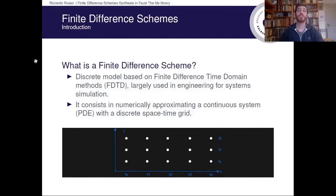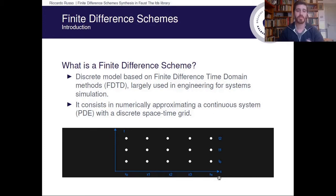So first, what is a finite difference scheme? It's a discrete model that simulates a continuous system. It's a method which is largely used in engineering for system simulation and it's actually a pretty old idea. Basically it consists in numerically approximating a continuous system, usually a system of partial differential equations, with a discrete space-time grid, like the one we can see here in this image, where we discretize the time and space axis obtaining a series of discrete points.